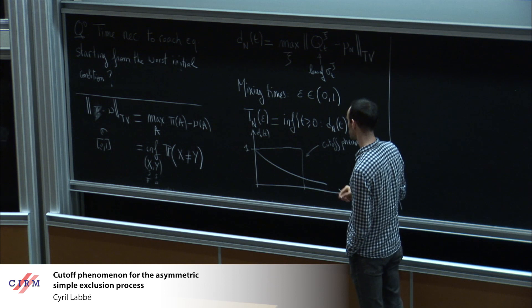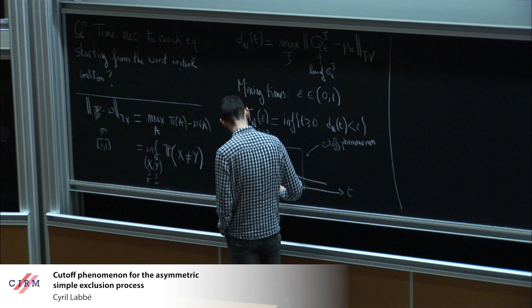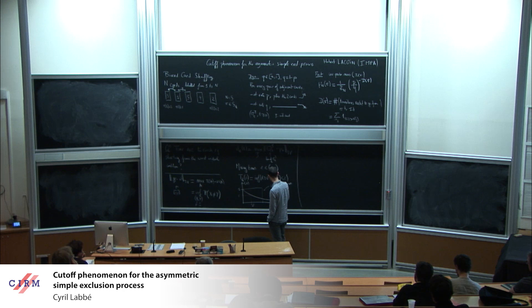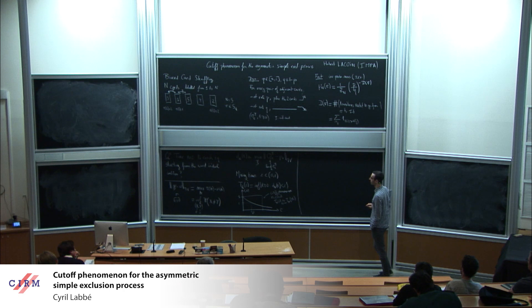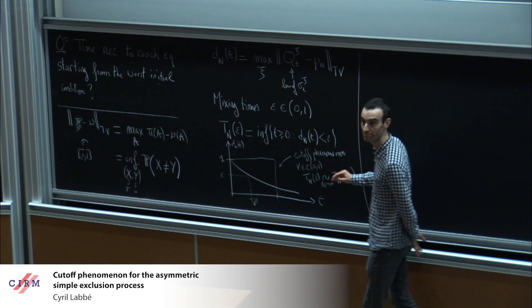In terms of mixing times, without cutoff you have a smooth decay with all mixing times at different scales. When you have a cutoff phenomenon, all the mixing times concentrate — they are all equivalent at first order. Mathematically, for all epsilon, T_n(epsilon) is equivalent to T_n(1/2) as n goes to infinity.